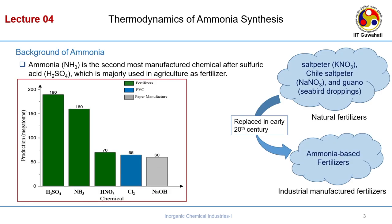Ammonia is the second most manufactured chemical after sulphuric acid, and is majorly used in agriculture as fertilizer. Looking at worldwide production of inorganic base chemicals in megatons per year: sulphuric acid leads at close to 190 megatons per year, then ammonia, then nitric acid, chlorine, and caustic soda (NaOH). Sulphuric acid and ammonia — shown in green — are mainly useful in the production of fertilizers, representing the greatest use of these two inorganic base chemicals.